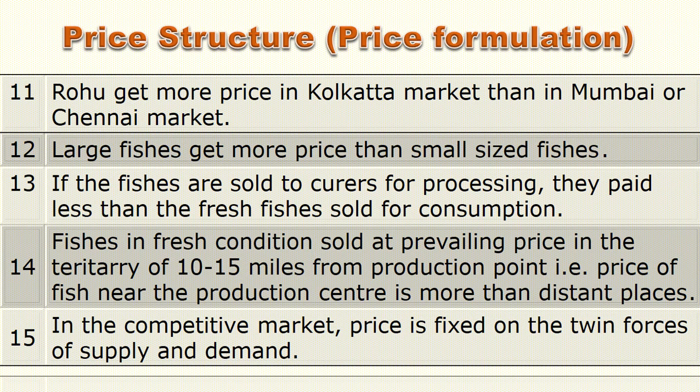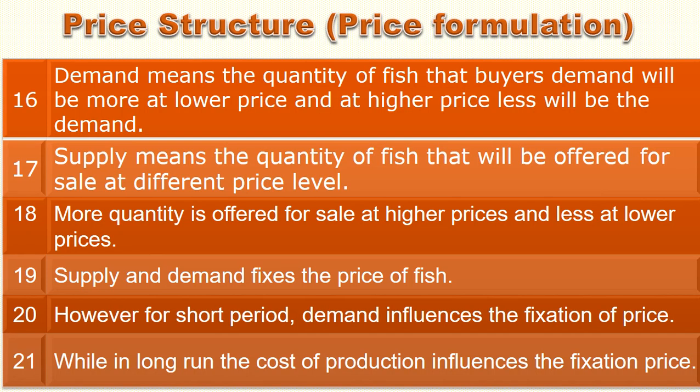In the cooperative market, price is fixed by the twin forces of supply and demand. Demand is the quantity of fish that buyers want — demand will be more at a lower price, and at a higher price, less will be the demand. Supply means the quantity of fish offered for sale at different price levels — more quantity is offered at higher price and less at lower price. Supply and demand fix the price of fish. For the short run, demand influences price fixation, while in the long run, the cost of production influences the fixation of price.